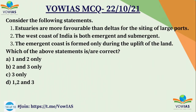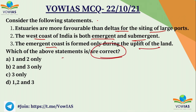Now let's look at the question of the day. Consider the following statements. First one: estuaries are more favorable than deltas for the siting of large ports. Second one: the west coast of India is both emergent and submergent. Third one: the emergent coast is formed only during the uplift of the land. Options are: A) 1 and 2, B) 2 and 3, C) 3, D) 1, 2 and 3. Do give your answer in the comment box and tomorrow we will discuss this question. That's it from my side — I'll see you again tomorrow with five more MCQs. Till then, keep studying and stay tuned. Jai Hind.